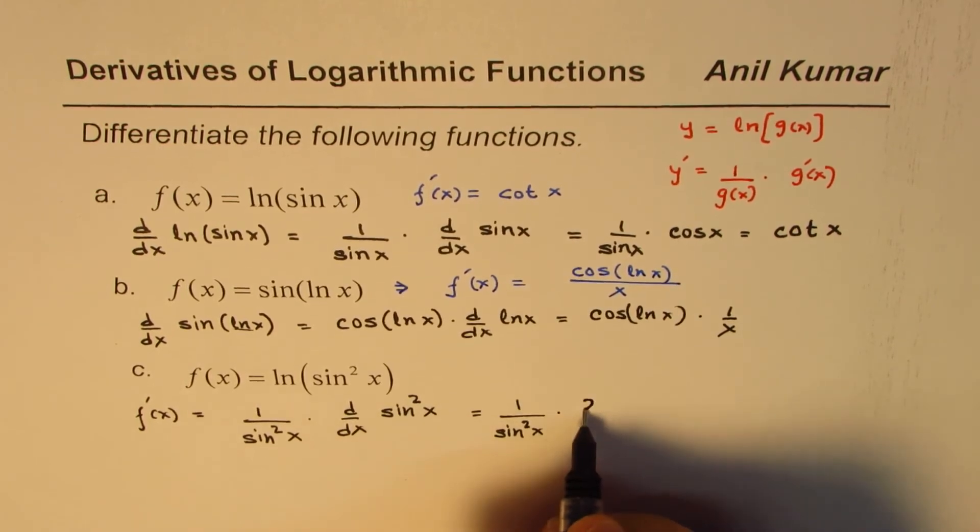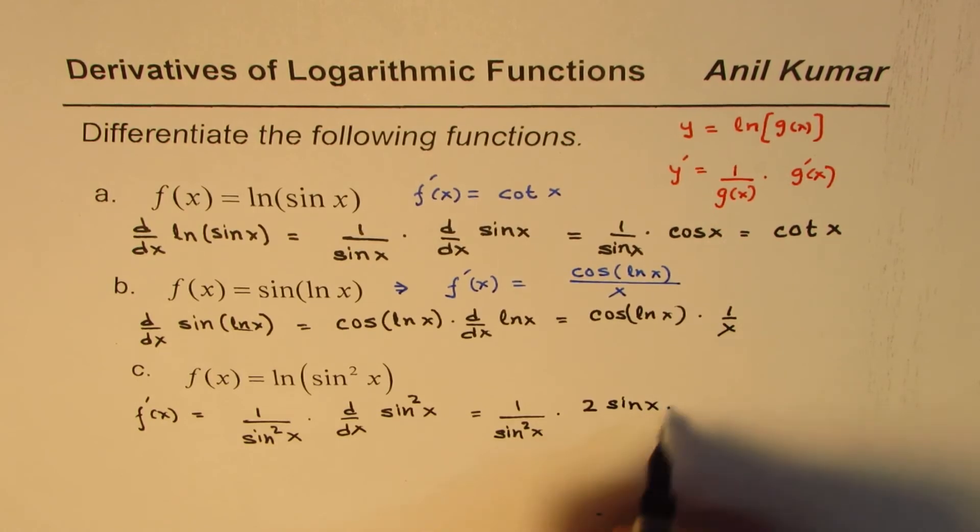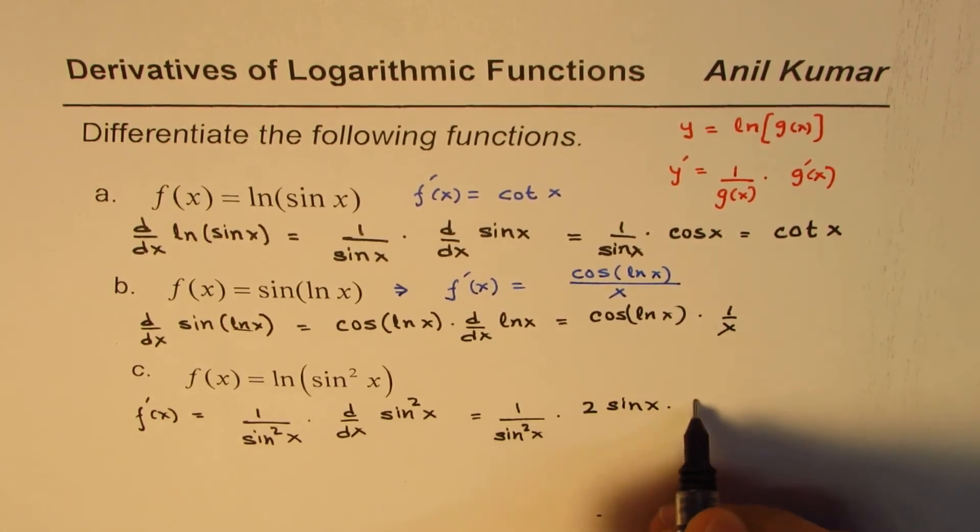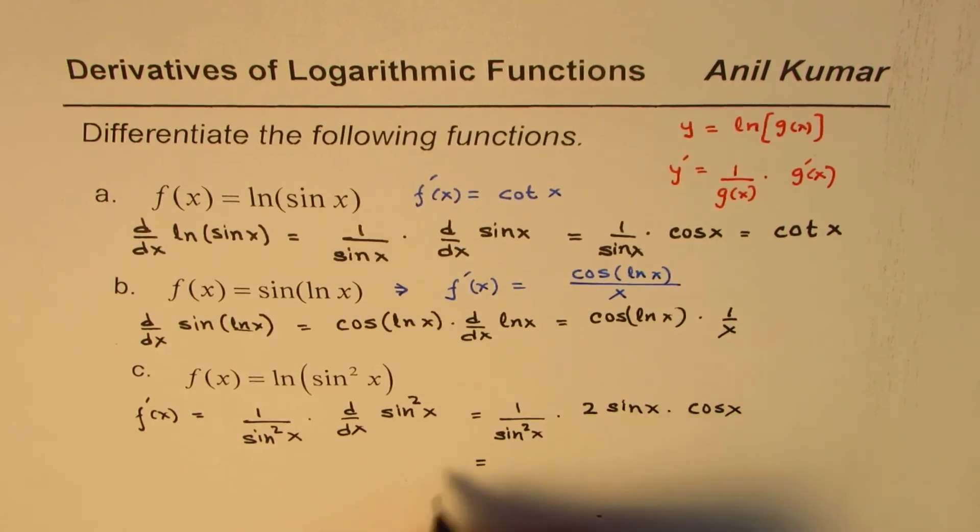So derivative of this is 2 times sine x times derivative of sine x which is cos x. So once you simplify this one of the sine x's gets cancelled.